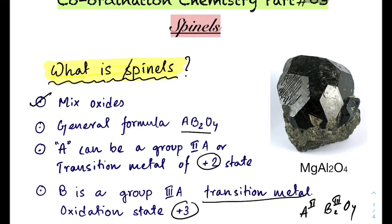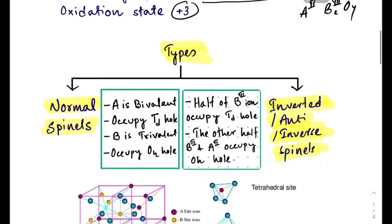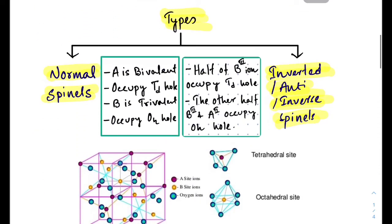This is the structure of naturally occurring spinels. There are two types of spinels: one is normal spinel, and the other is inverted spinel, also called anti-spinel or inverse spinel.